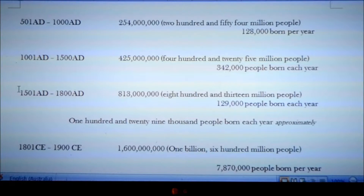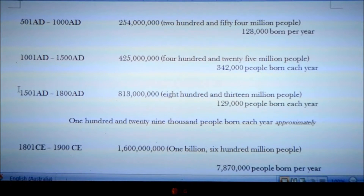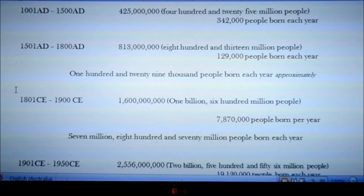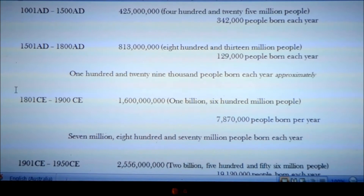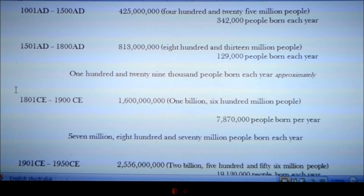From the year 1501 to 1800 AD, the population is now 813,000,000 people. That means for that 300-year period, 129,000 people were being born each year. For the next 100 years, 7 million people are added to the population every year, so that by the year 1900 the population is now 1,600,000,000 people.